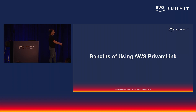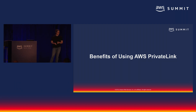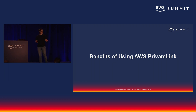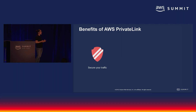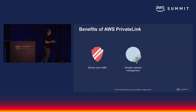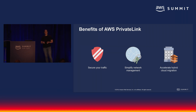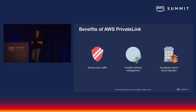Before I show you how, I'm going to show you why. There are multiple benefits of PrivateLink, but I'm going to focus on three main ones. The first is that it's secure because your traffic does not traverse the internet. It's really easy to use and it simplifies your network management, especially at scale. And lastly, PrivateLink can help you migrate your systems from your on-premise location to the cloud or to operate in a hybrid model.